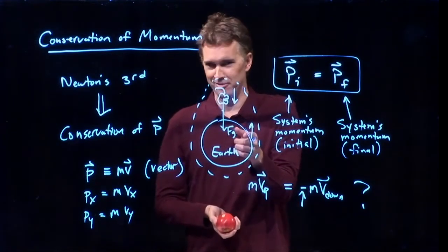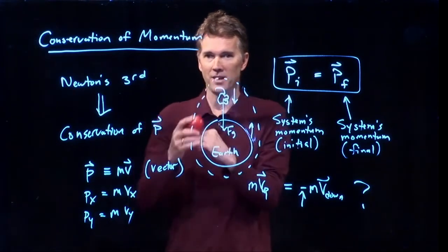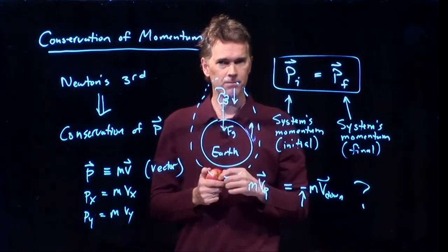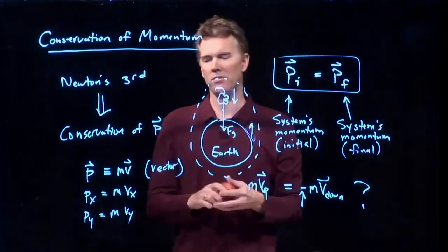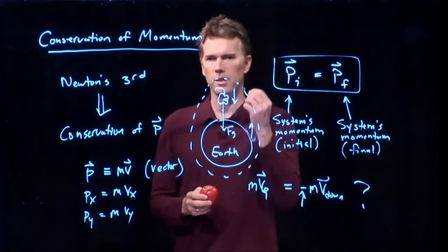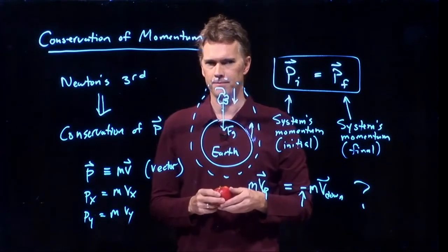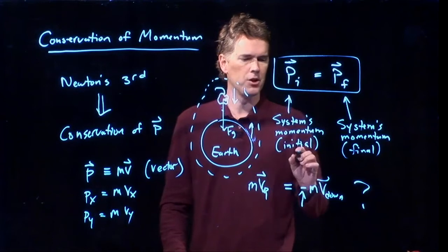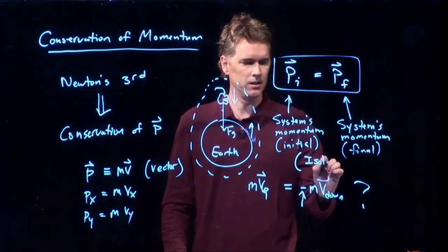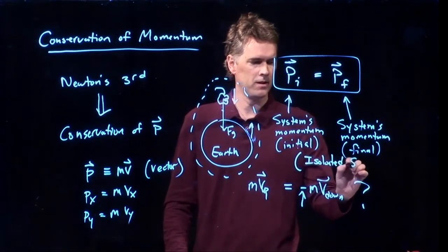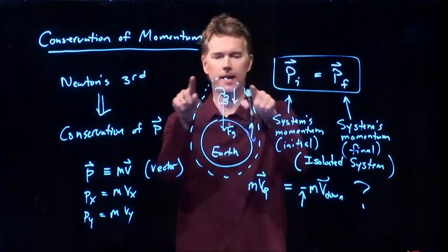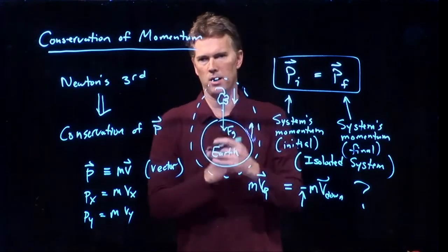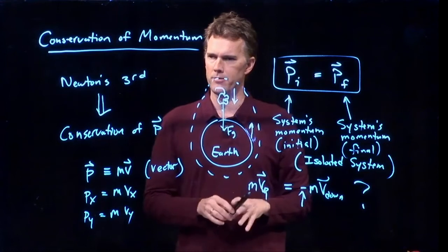Now, the earth is pretty massive, right? So it doesn't move very far. It doesn't have a lot of velocity, but it has the exact same momentum as the apple. M times V, since M for the earth is huge, the velocity can be small. So inherent in this thing that we just talked about is the notion of an isolated system. You have to draw a dashed line around your system such that no forces cross that dashed line. And that's sort of step one in identifying these problems.